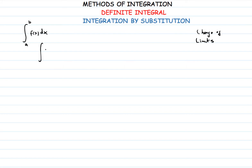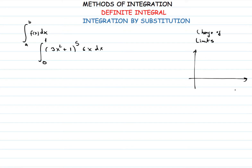Let us take an example to understand this concept. We have the integration of (3x² + 1) raised to 5, times 6x dx, from 0 to 1. This is a definite integral, which means we need the boundaries of integration — 0 is the lower limit and 1 is the upper limit. You can imagine this represents the area under the graph of the function from 0 to 1.